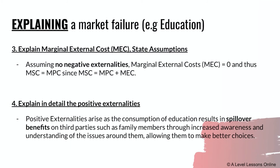Next, explain the marginal external cost and state assumptions. When looking at positive externalities, we assume the absence of negative externalities — they cannot occur at the same time. Therefore, marginal external cost (MEC) equals zero, and thus marginal social cost (MSC) equals marginal private cost (MPC), since MSC = MPC + MEC.